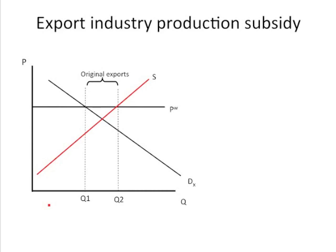On the other hand, a production subsidy that's in an export industry is not banned. Those are allowed under certain circumstances, especially if they don't cause material injury to a firm abroad, which we'll talk about later when we discuss countervailing duties.